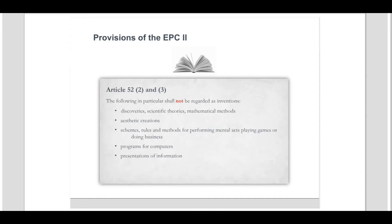As already mentioned, this list of non-inventions is not exhaustive, as Article 52, Paragraph 2 only refers to those listed items in particular. Furthermore, Paragraph 3 states that the exclusions only apply when applications relate to subject matter or activities as such, without further specifying what exactly 'as such' means. Therefore, there is a need to interpret the provisions of Article 52 in order to understand what is considered to be excluded from patentability. Such interpretation is given through relevant decisions of the Boards of Appeal.